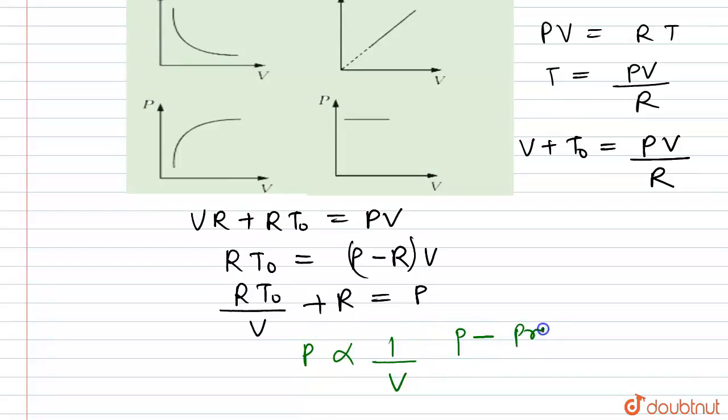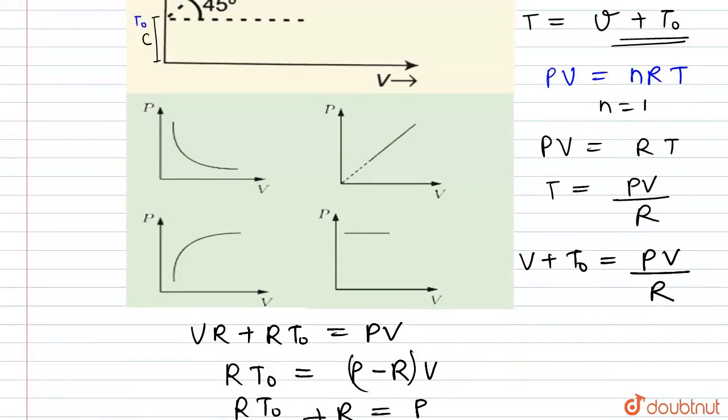Now from all these four graphs - this one is A, this one is B, this one is C, this one is D - so from all these graphs we can see that the graph A represents the inverse relationship.